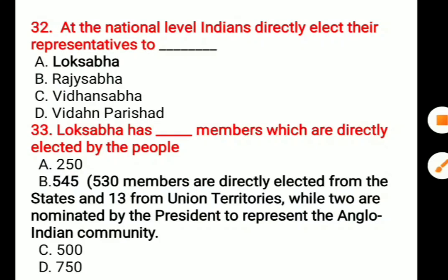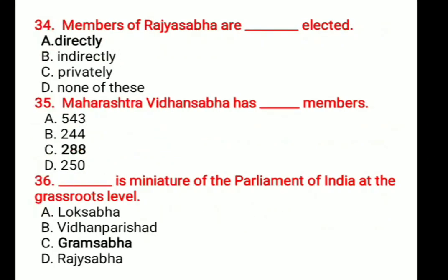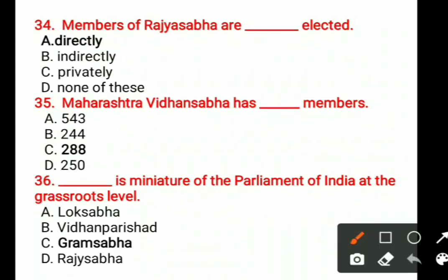Question number 34: Members of Rajya Sabha are blank elected. Options are: A. Directly, B. Indirectly, C. Privately, D. None of these. The correct answer given here is Directly.